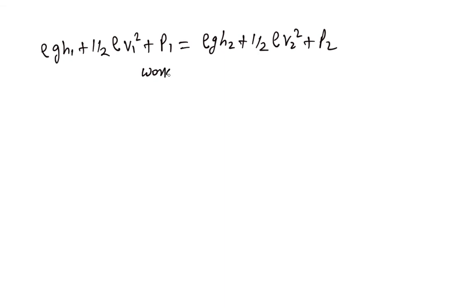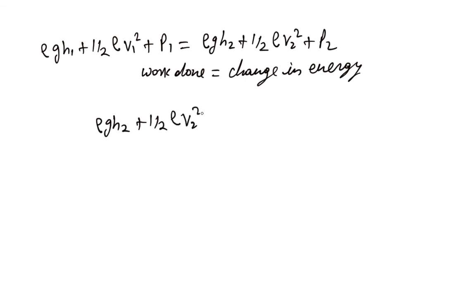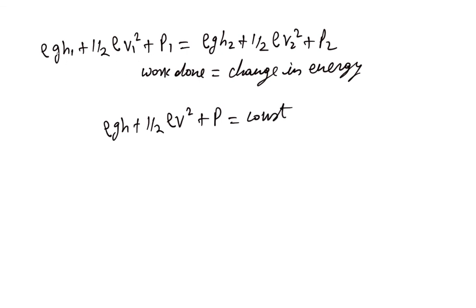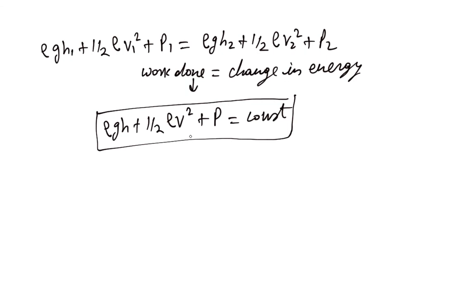This is just work done equals change in energy. What this tells us is that ρ·g·h + ½·ρ·v² + P is a constant — it does not change with height. No matter which height we choose, we end up with the same value. This is what we deduce from our analysis, and this is called Bernoulli's theorem. We'll discuss some examples in the next two lectures.